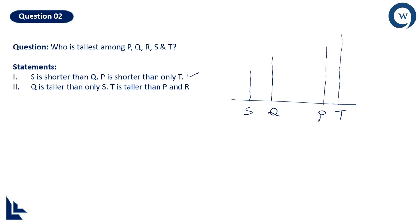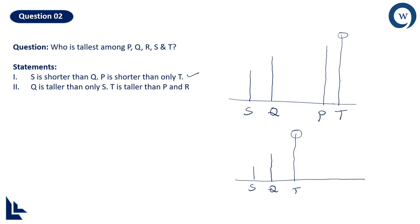You never know if statement 2 alone can also answer unless you check it. Statement 2 says: Q is taller than only S, meaning S is the shortest and Q is second from the bottom. Then T is taller than P and R, which means T is the tallest in this case as well. I can find the answer using statement 1 alone and also using statement 2 alone, independently. So the answer to question 2 is C, just like the previous problem.